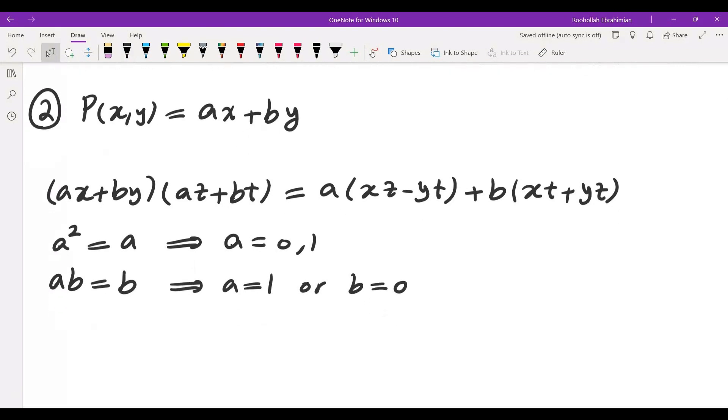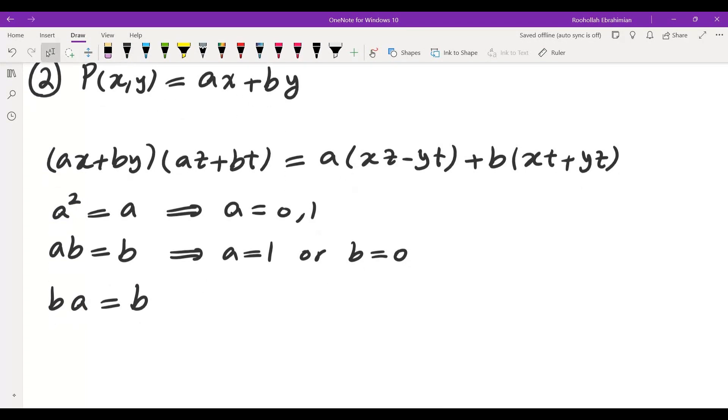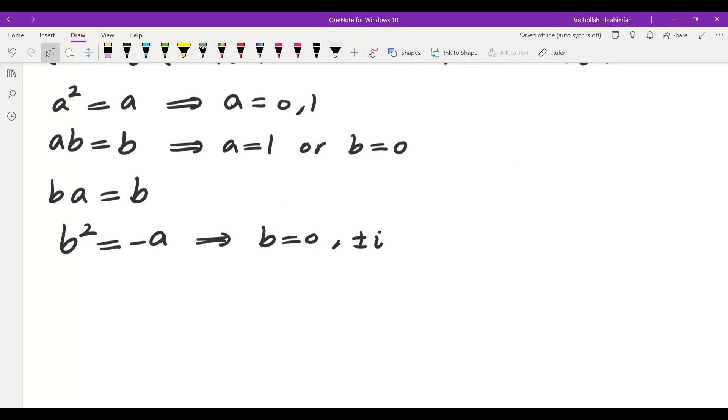If I compare the coefficient of Y Z I would get BA on the left and I would get B on the right so that's the same thing and the coefficient of Y T on the left is B squared and on the right is negative A. So this tells me B is either 0 or if I have substitute A by 1 I get plus or minus I. So this gives me that either B and A are both 0 which gives me the original solution of the P of X comma Y equals 0 or the other possibility is P of X comma Y equals X coefficient of X is 1 and then plus minus I Y.